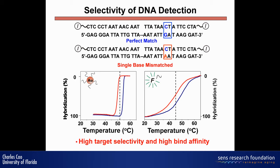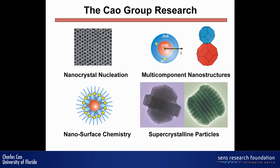All these nanomaterials generate a bunch of magic properties associated with size and shape. We need to have much better control than what Faraday did 150 years ago. We need a size distribution less than 5% or even narrower, much better surface distribution, and much better shape distribution. These all control the characteristics of the particles. In our research group, we want to control nucleation and growth, make multi-component nanostructures, supercrystalline particles, and work on surface functionalization.